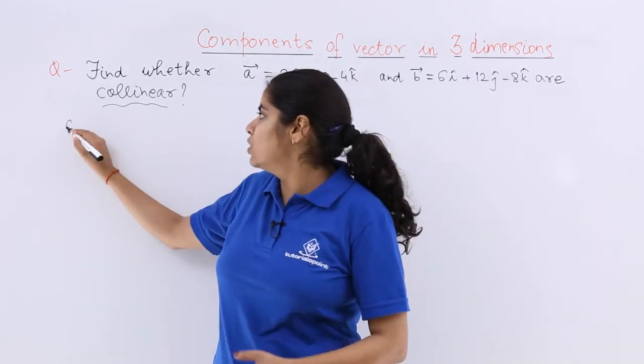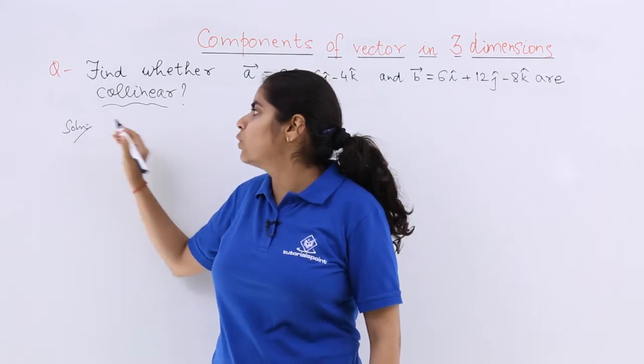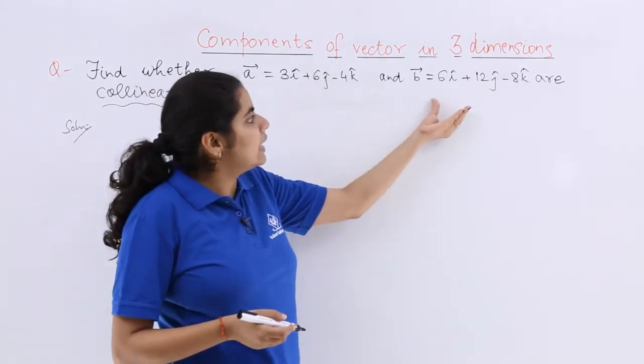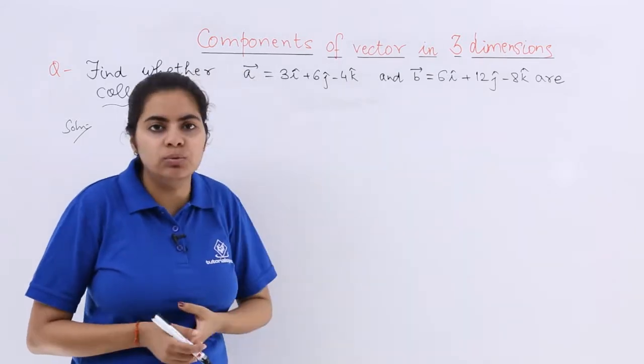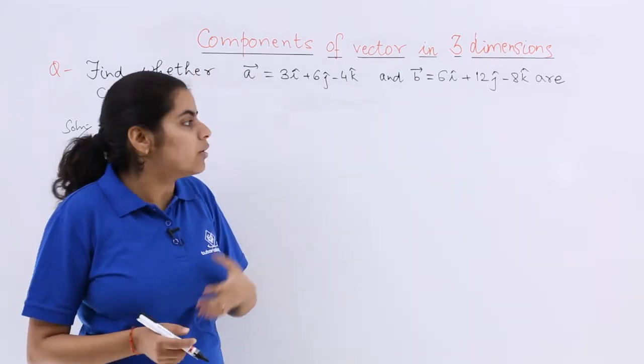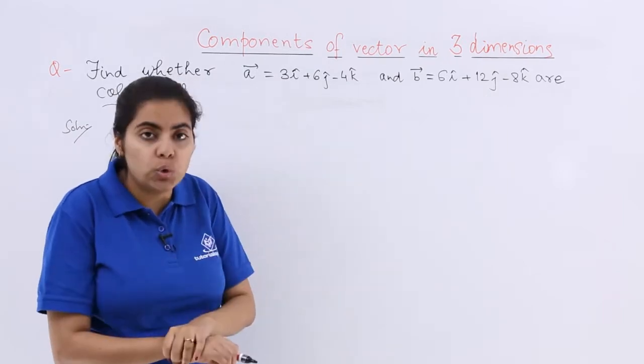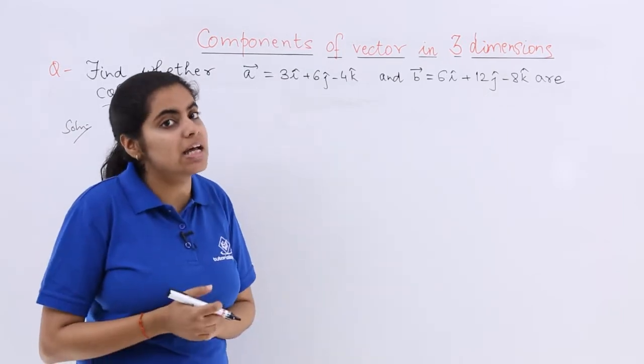So I write solution to understand whether these are collinear or not. If the first vector and second vector are there in front of you, can you express one of these vectors in terms of the other? If so, definitely these vectors are collinear.